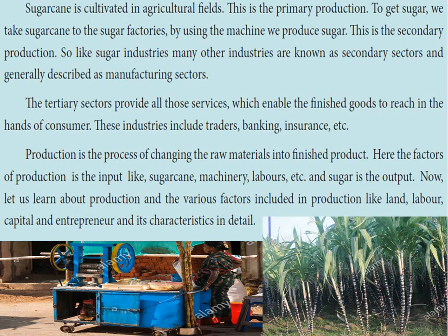Like sugar industries, many other industries are known as secondary sectors and are generally described as manufacturing sectors. So you have the primary production sector, which is agriculture, and the secondary production sector, which is manufacturing.